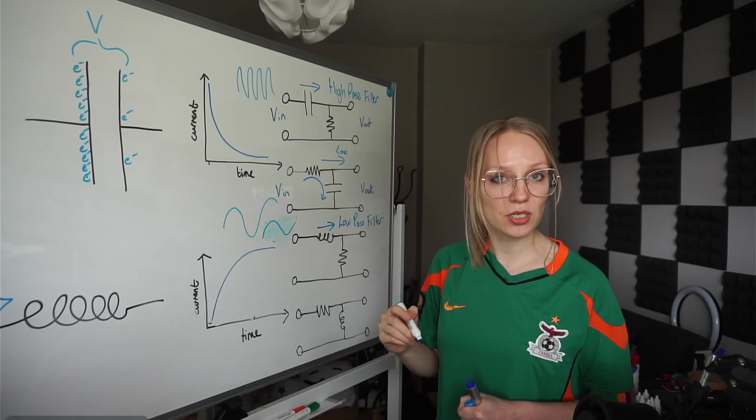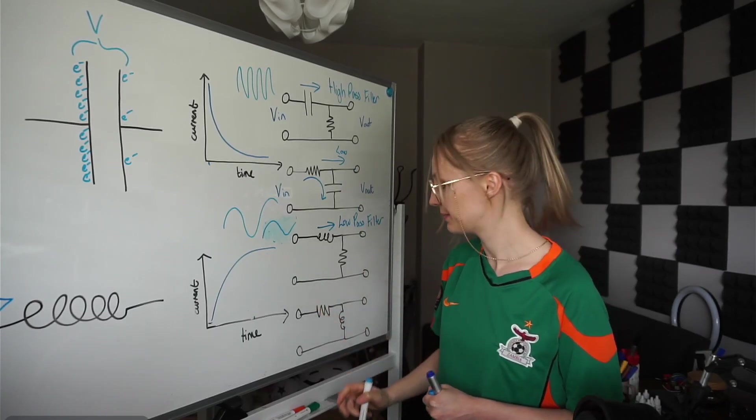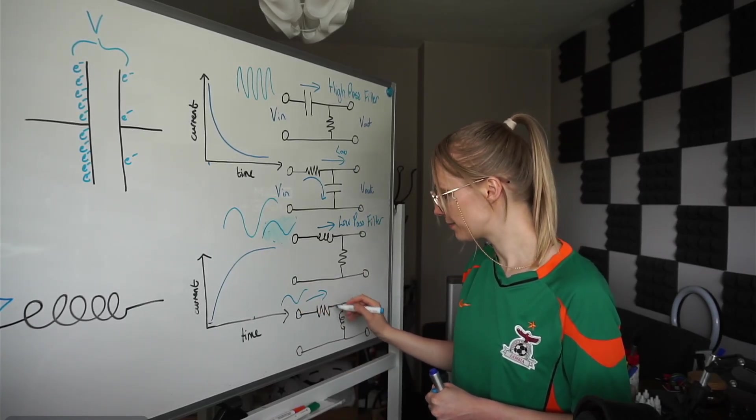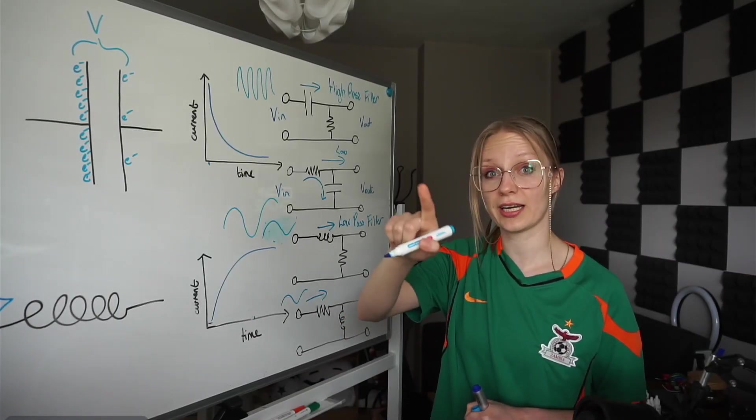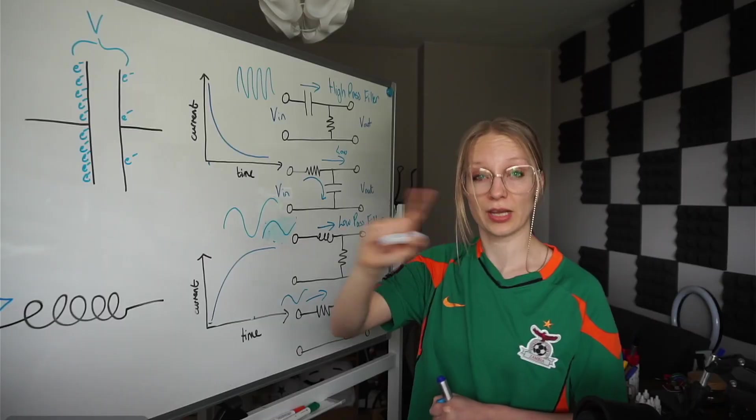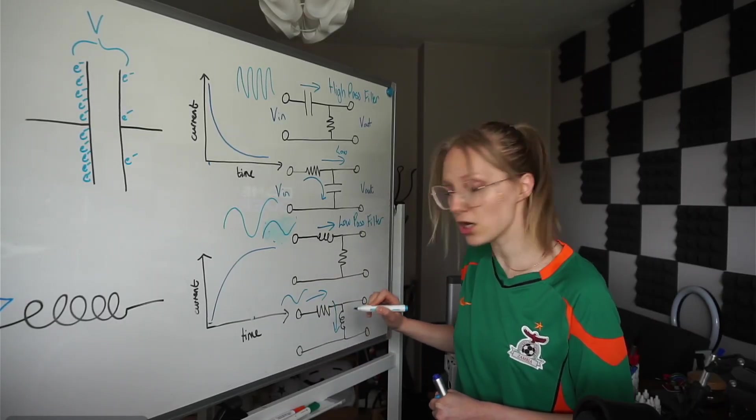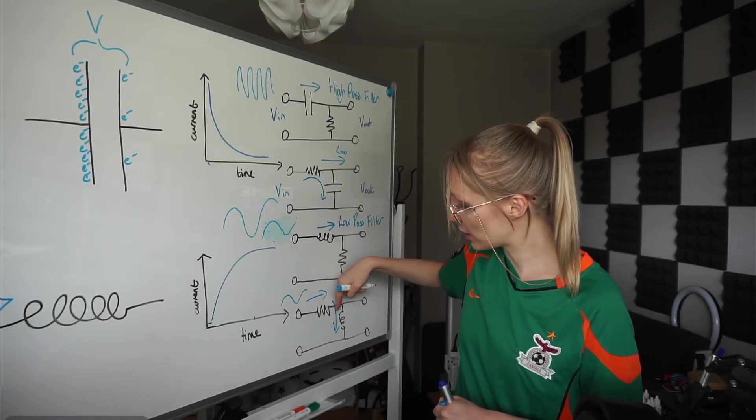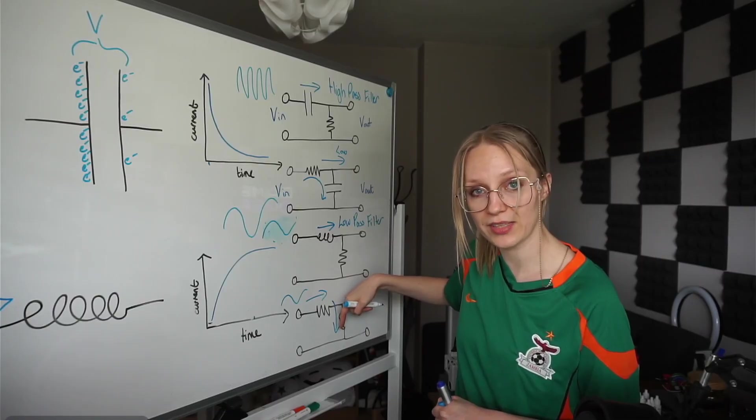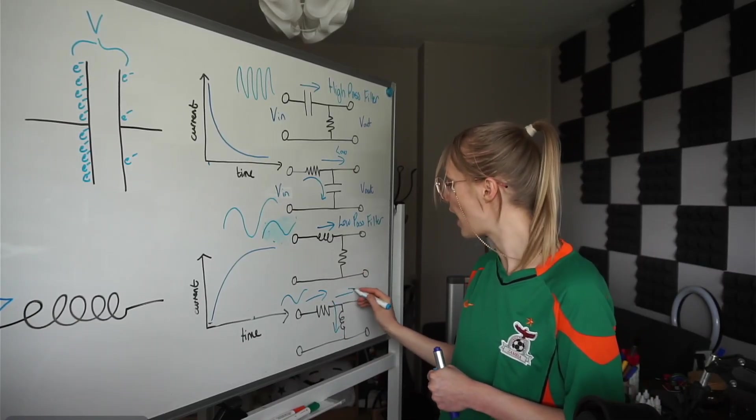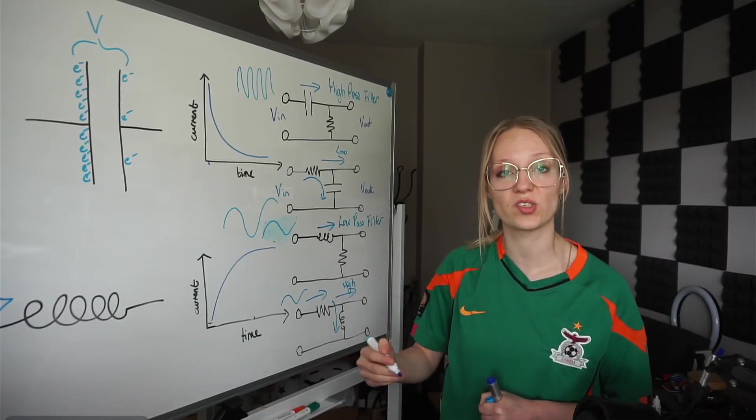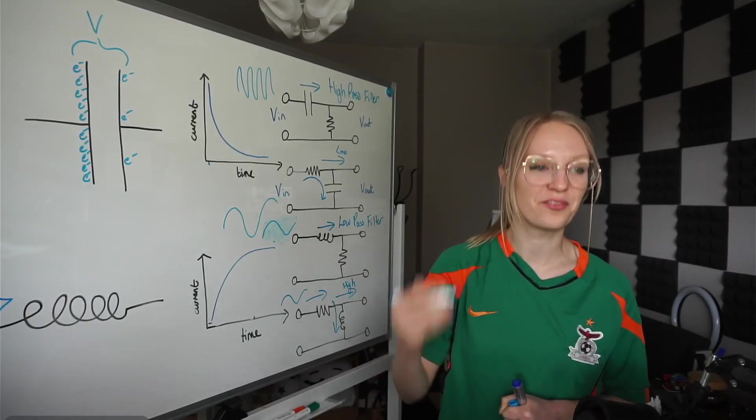And once again, similar to the way we were studying the capacitor, if a low frequency wave is coming in, because of the low impedance, I highly recommend you checking out one of my inductor videos about this where I teach about impedance. Because of the low impedance, the low frequency wave that's coming in is going to be filtered out and into ground. And so only high frequency is going to get through here. And that is why it's called a high pass filter.